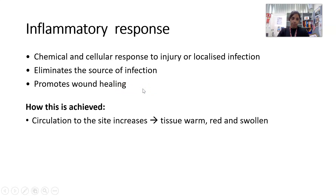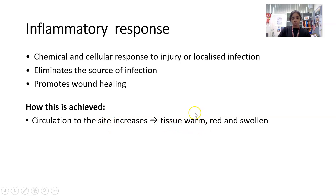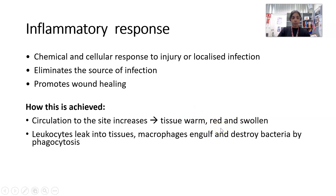Let's say you have a splinter in your skin — you now have a break in the skin that has introduced a pathogen into your body. The first response is an increase in blood circulation at that tissue injury site, resulting in feelings of warmth. The redness and swelling come from vasodilation and increased blood flow. Macrophages, the phagocytic white blood cells, are introduced to that tissue damage site and their job is to destroy bacteria by phagocytosis.